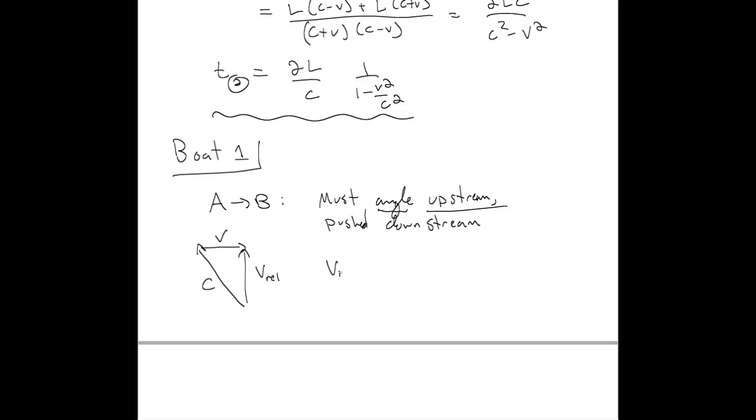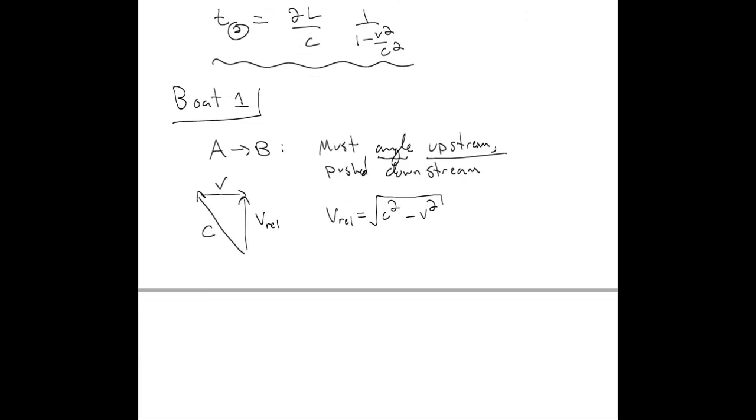And the total net result is that the boat just moves perpendicular to the direction of the river flow. And that relative velocity can easily be found by Pythagorean theorem. So we find that the relative speed is the square root of C squared minus V squared.